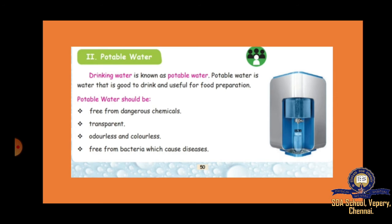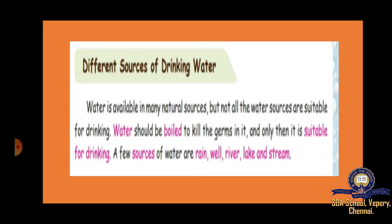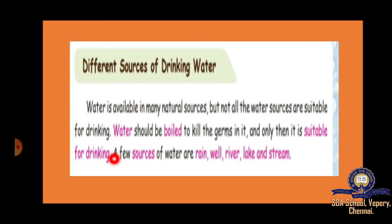We know that rain is the main source of water. Let's see other sources of drinking water. Water is available in many natural sources, but not all water sources are suitable for drinking. Water should be boiled to kill the germs in it, and only then it is suitable for drinking. Without boiling, we should not drink because it contains bacteria which cause infections and diseases. If we boil the water, all the germs get killed and it is good for drinking. A few sources of water are rain, well, river, lake, and stream.